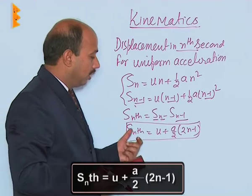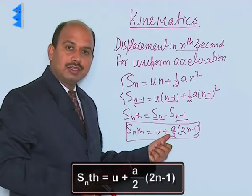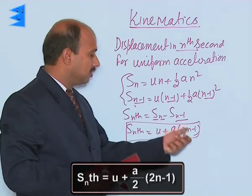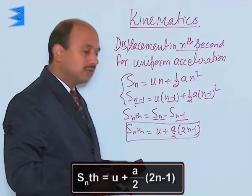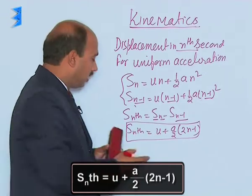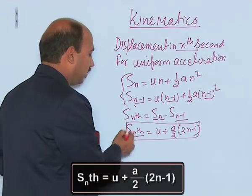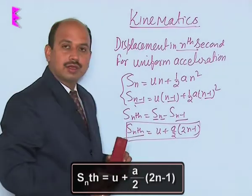This relation is for displacement in the n-th second. Here, a is uniform acceleration, n is time, u is initial velocity, and Sₙ_th is displacement in the n-th second.